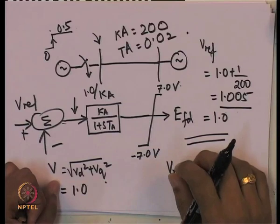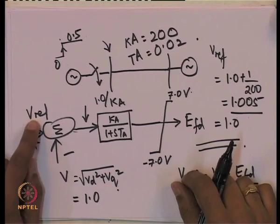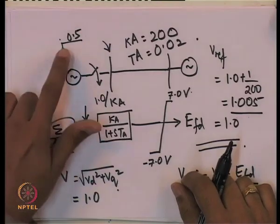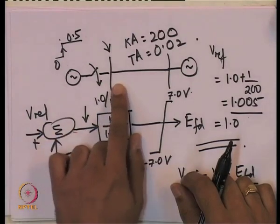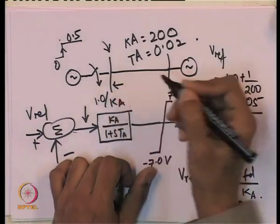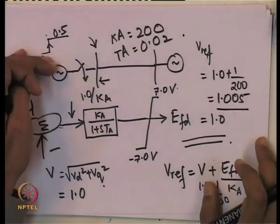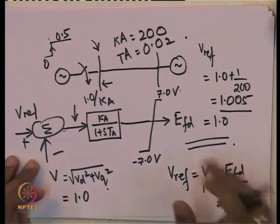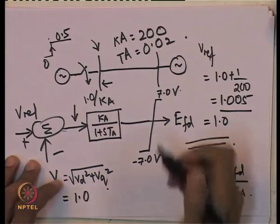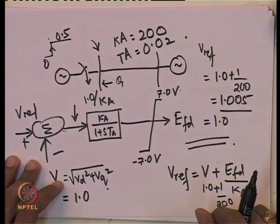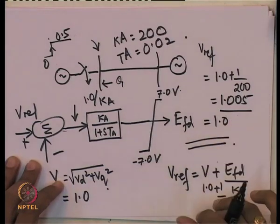That is the first test signal we will give to this machine. The second test signal is a step change in Vref, keeping torque constant — we increase the reference voltage of the AVR. If we increase this voltage, the mechanical power or electrical power will not be affected. Instead, since this voltage is increased, the reactive power output of the machine will change. This is one important thing we will see in our simulation.